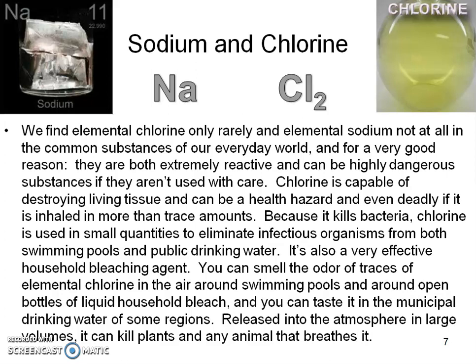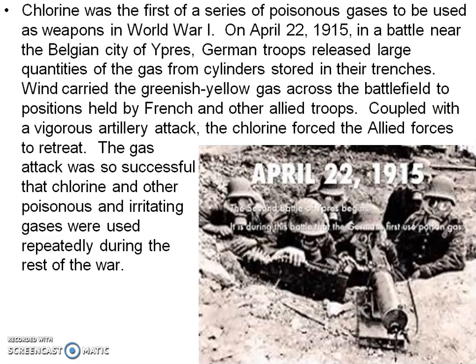Released into the atmosphere in large volumes, it can kill plants and any animal that breathes it. So chlorine, as helpful as it is in killing bacteria to keep us healthy, is also very dangerous in larger amounts. Chlorine was the first of a series of poisonous gases to be used as weapons in World War I. On April 22nd, 1915, in a battle near the Belgian city of Ypres, German troops released large quantities of gas from cylinders stored in their trenches. Wind carried the greenish-yellow gas across the battlefield to positions held by French and other allied troops. Coupled with a vigorous artillery attack, the chlorine forced the allied forces to retreat. The gas attack was so successful that chlorine and other poisonous, irritating gases were used repeatedly during the rest of the war.